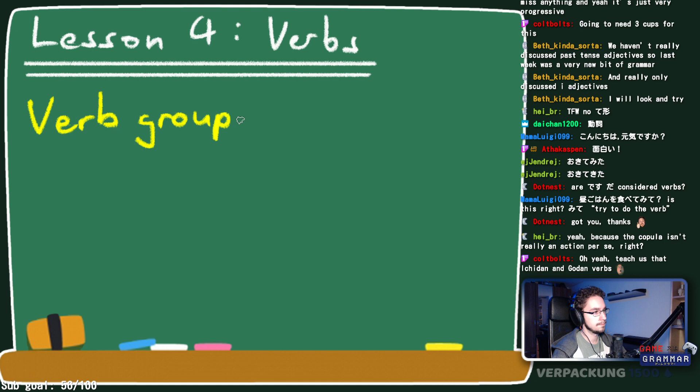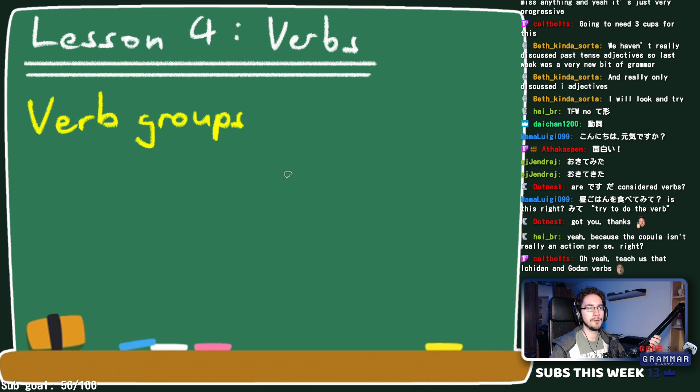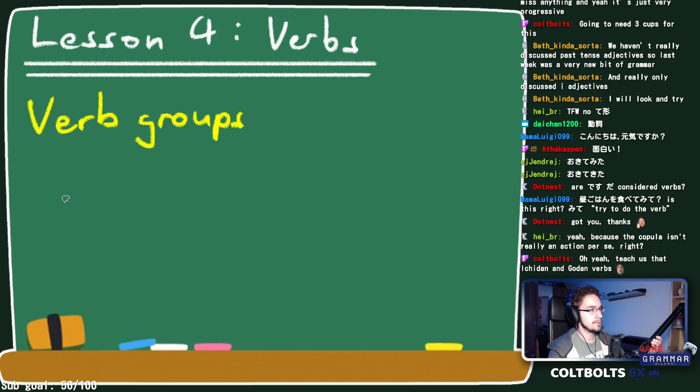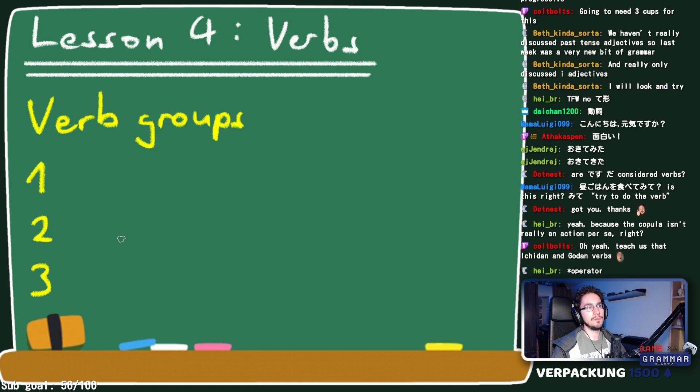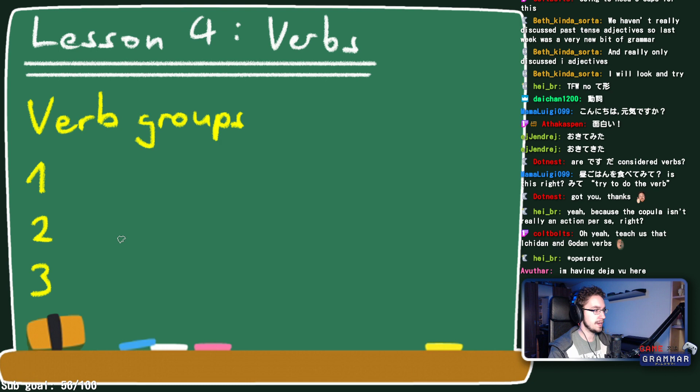There are only really three groups of verbs. Because the copula isn't really an action — it's more a state of being — we set it aside. So: one, two, and three. You may find other terms out there for these.